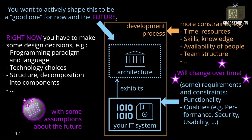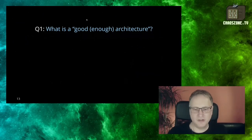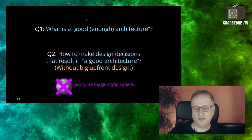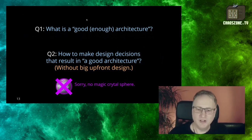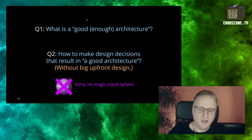This leads us to two major questions. Question one: what really is a good architecture — or at least one that is good enough for your needs? And question two: how can we make design decisions that result in a good architecture, doing this without big upfront design, since you don't know the future and can't foresee it? You have no magic crystal ball to tell you what your requirements will be in several months or years.